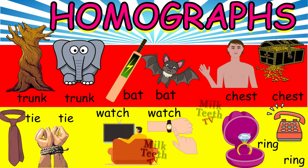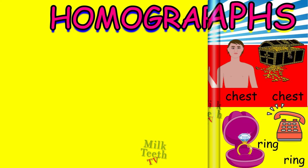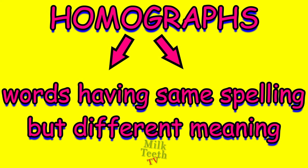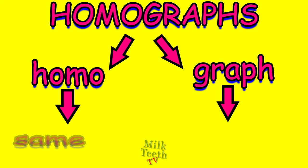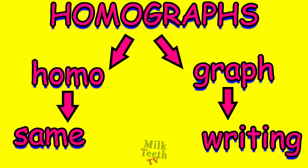Hi, my little friends. Today, we will learn about homographs. Homographs are words having the same spelling but different meanings. The word homograph is derived from two words: homo and graph. Homo means same, while graph means writing or spelling. So it is clear that homographs are words with the same writing or spelling, yet different meanings.